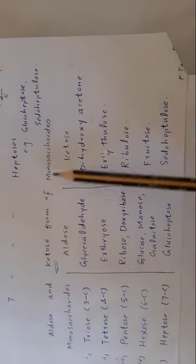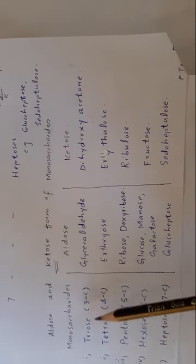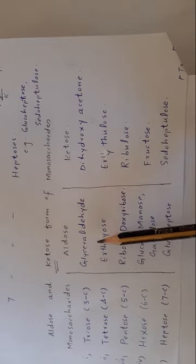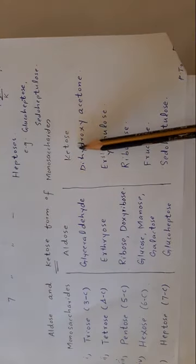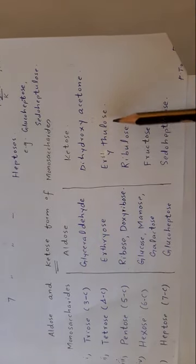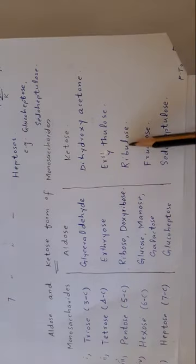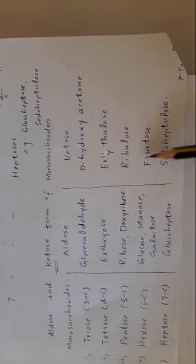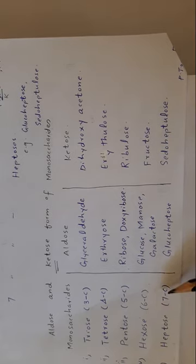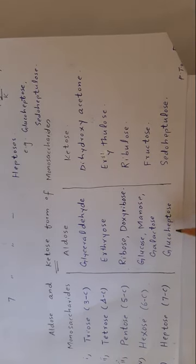Aldose and ketose forms of monosaccharides: aldose form means those monosaccharides which have an aldehyde functional group — for example, glyceraldehyde is a triose with 3 carbon atoms in aldose form. Ketose means those monosaccharides which have a ketone functional group — for example, dihydroxyacetone is also a triose with 3 carbon atoms. Similarly, for tetroses: erythrose (aldose) and erythrulose (ketose). For pentoses: ribose and deoxyribose (aldose), ribulose (ketose). For hexoses: glucose and mannose are aldose, while fructose is a ketose hexose. For heptoses: glucoheptose is aldose form, while pseudoheptulose is ketonic form.